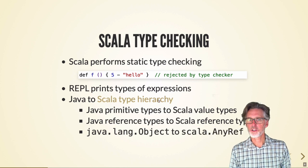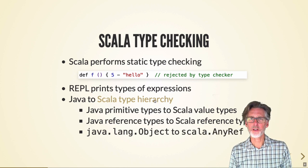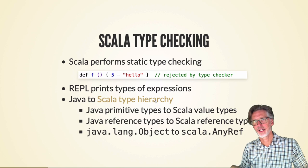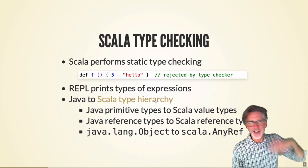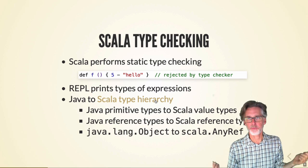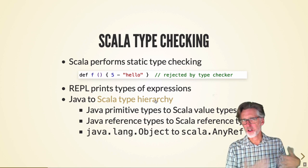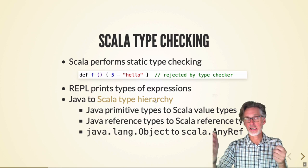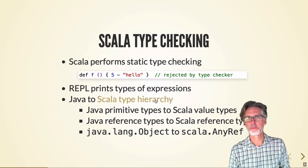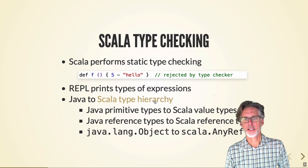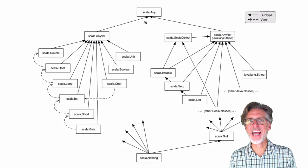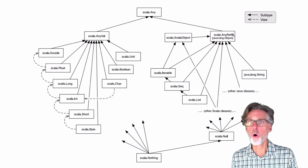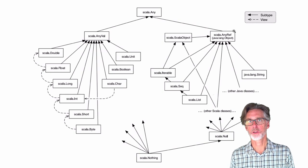In Java the base types and the object types are completely separate, so it's impossible to write a function that works over either a base type or an object type — you have to pick. Java does auto-boxing and unboxing to get around that, converting int to Integer so you can put an integer into a list. Scala improves on this by adding a type called Any which unifies base types and object types.